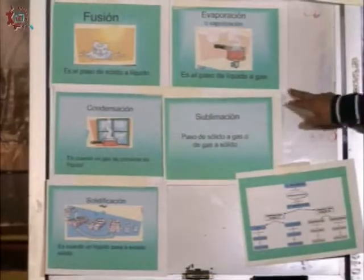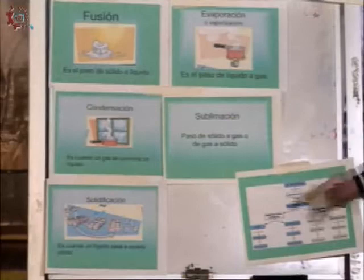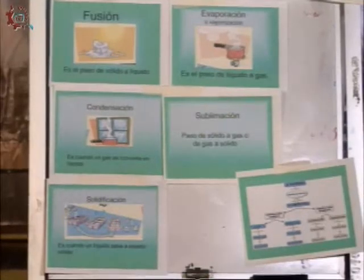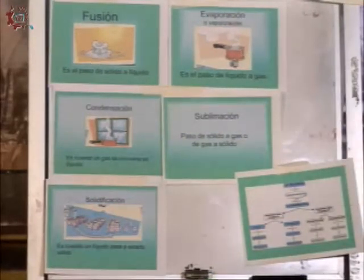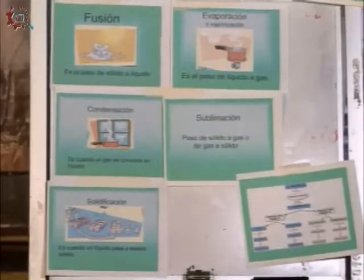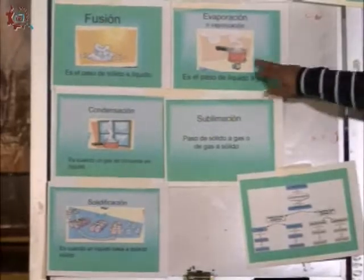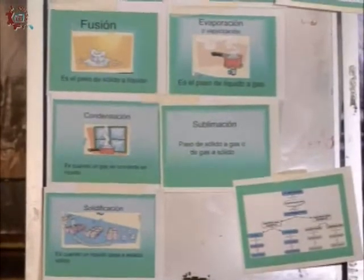Evaporación es el paso del estado líquido a gas. Un ejemplo: ponemos un recipiente en la estufa o en laboratorio, ponemos un vaso de precipitados con agua, le ponemos una fuente de calor, mechero de Bunsen o lámpara de alcohol. Aumenta la temperatura en el líquido y del líquido pasa a gas; se ve el cambio de estado que se llama evaporación.